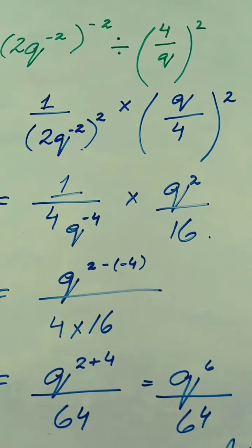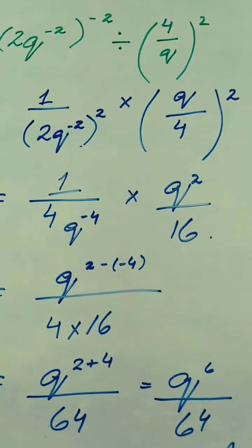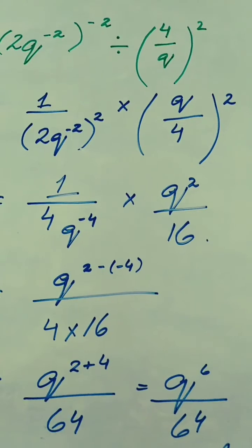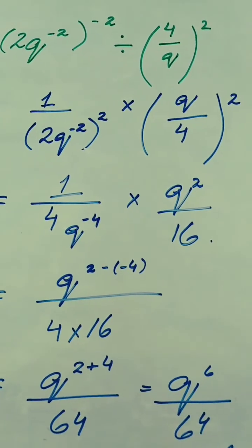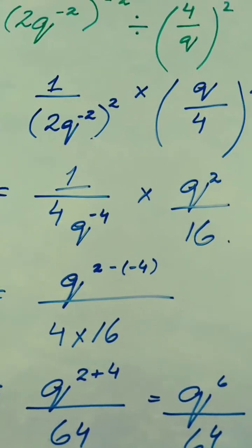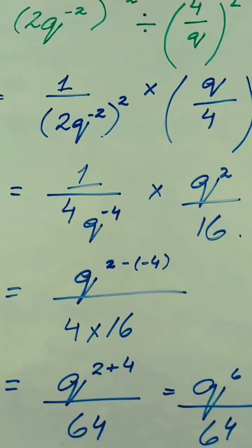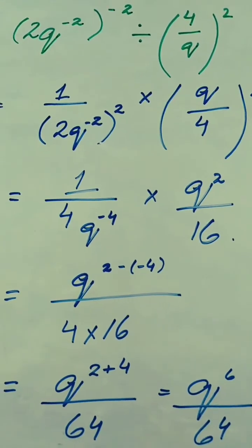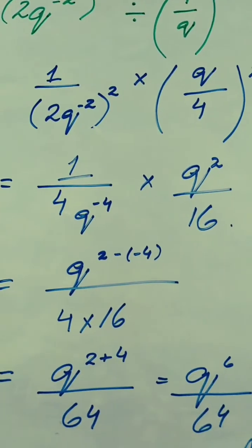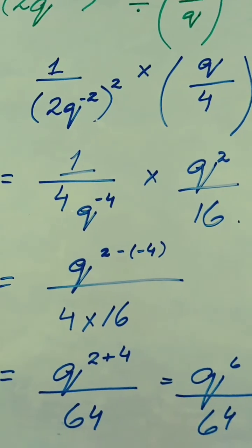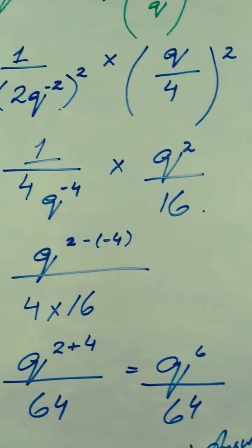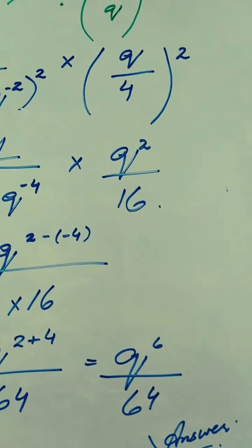Now here the variable is the same, which is q. Whenever variables are dividing with one another, the powers subtract. The power of q in the numerator is 2 and in the denominator is minus 4. So subtracting minus 4 from 2: 2 minus minus 4. Since minus multiplied by minus becomes plus, it becomes 2 plus 4. In the denominator we have 4 times 16, which is 64. So the final answer becomes q raised to the power 6 over 64.